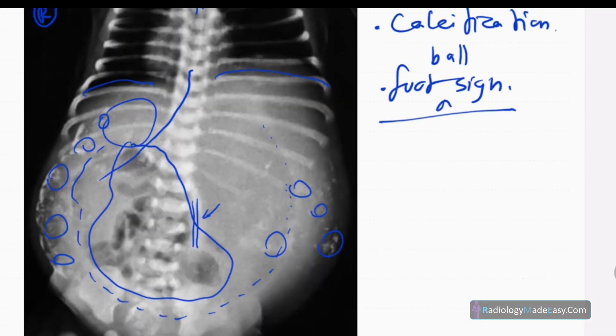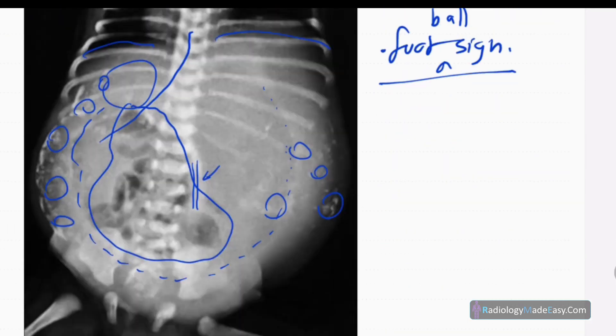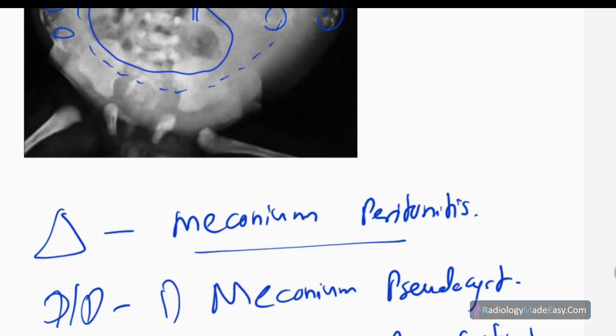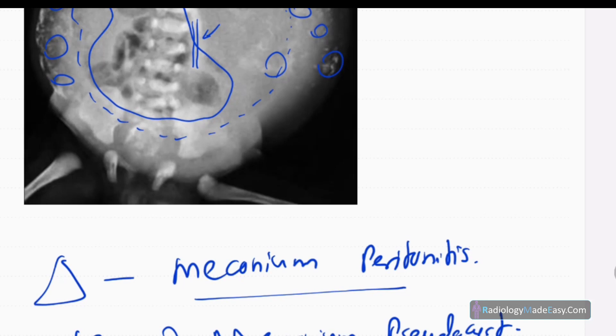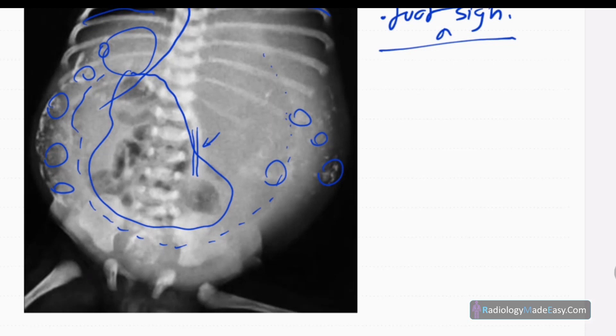When we talk about meconium peritonitis, it's due to ileal atresia and also in cystic fibrosis mucus plugs in the terminal ileum. Then there's perforation of the bowel and meconium gets leaked into the peritoneal cavity. The meconium within the abdomen gets calcified, so you see them as punctate calcifications within the peritoneal cavity.